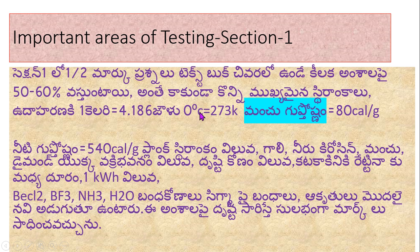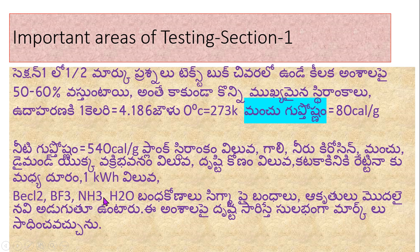Neat glucose is equal to 80 calories per gram; neat glucose is 540 calories per gram. Key topics include: flanks, dirankam, garl, niro, kerosene, manchu, diamond, kribanam, brushtikonam. 1 KWH is equal to 1 KWH. Chemical compounds such as barium chloride, boron trifluoride, ammonium hydroxide, H₂O, and sigma-pi bonds are important areas to study.